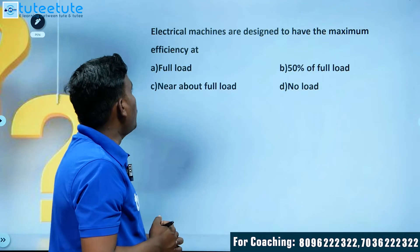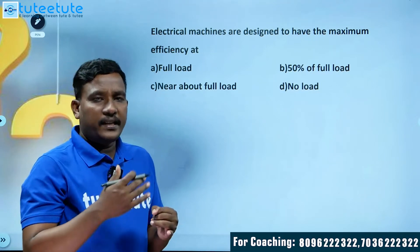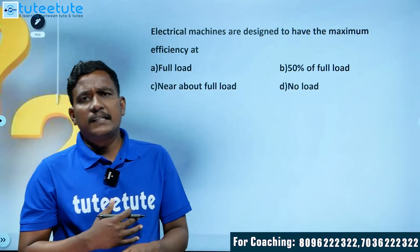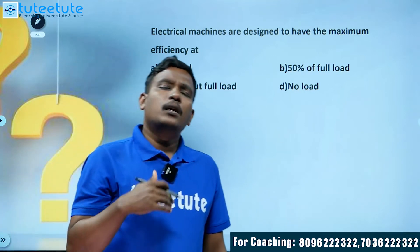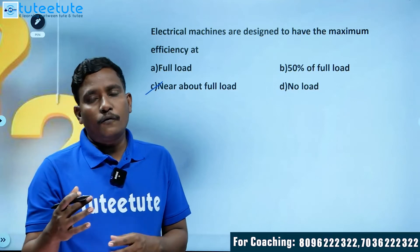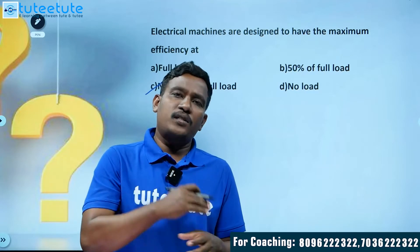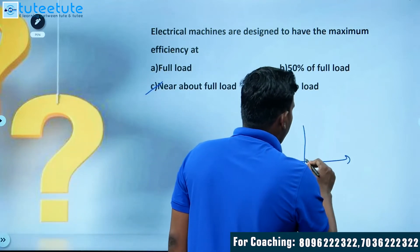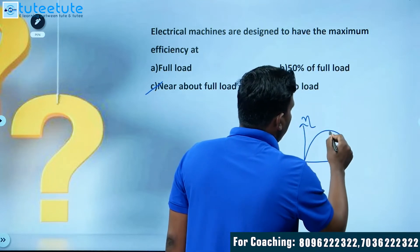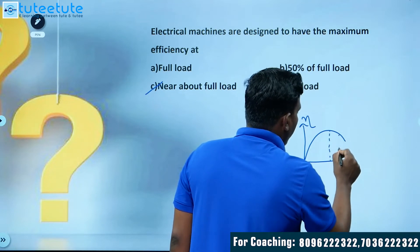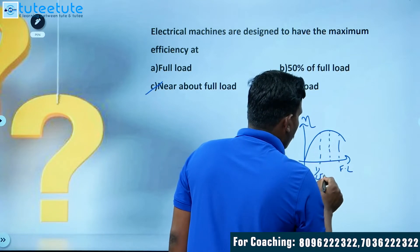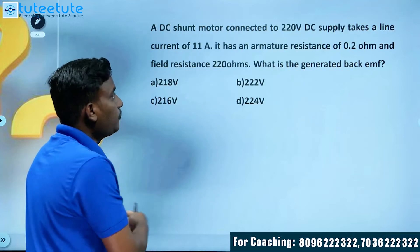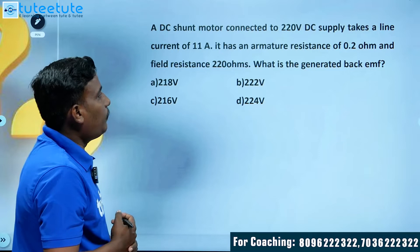Electrical machines are designed to have maximum efficiency near full load. Whether it's a transformer, DC machine, or induction machine, maximum efficiency occurs near full load. You can observe from efficiency curves: efficiency rises to a peak near full load, and at exactly full load it begins to reduce slightly. The maximum efficiency condition is near to full load. The answer is option C.